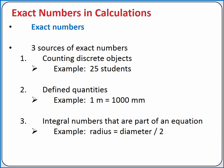These types of defined quantities will not affect our number of significant figures in our answer. The third source is for integral numbers that are part of an equation. For example, the radius of a circle is equal to the diameter of the circle divided by 2. The number 2 does not affect our significant figures in the calculation.